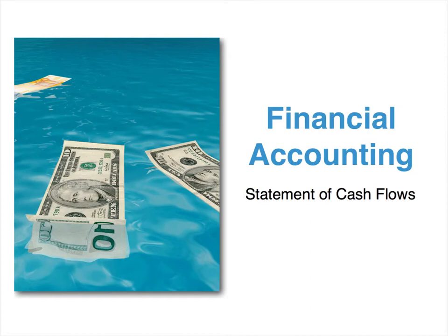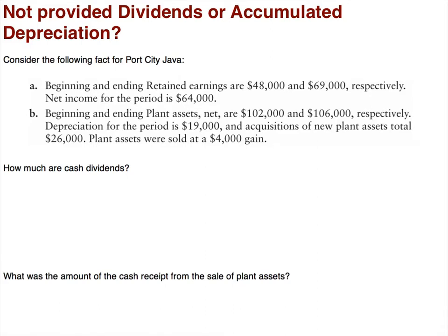Hi everyone. In this video on statement of cash flows, we're going to be looking specifically at how to calculate unknown amounts — for example, if we're not given dividends, how can we use information to find that number, as well as cash receipts from the sale of an asset. Specifically, what if we're not provided dividends or accumulated depreciation?